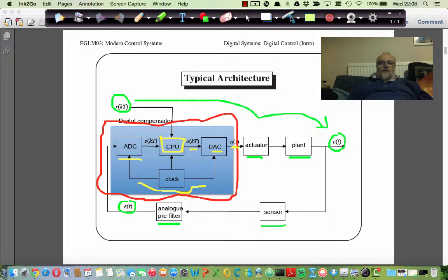So those are the sort of basic typical architectural control system. And apart from the fact that this thing in the red box here is digital, it's very similar to any other sort of classical control system that we've looked at.